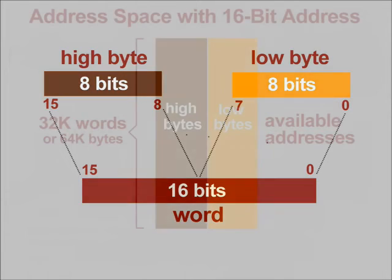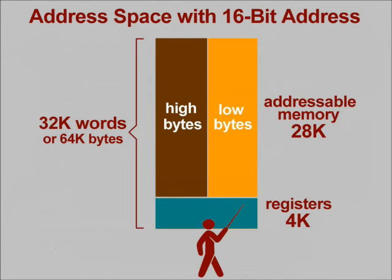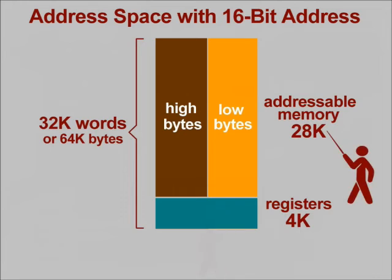In our basic PDP-11 system, we use a 16-bit address. This gives us approximately 32K of possible word addresses or up to 64K of possible byte addresses. Not all of these addresses are used for memory. As we've indicated here, 4K of word addresses are reserved for registers located in our I/O interface and in the CPU. The remaining 28K of word addresses are available for memory locations.